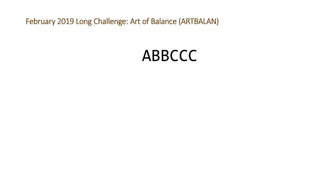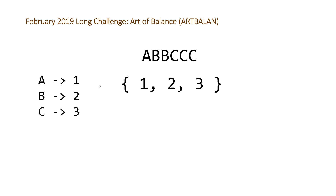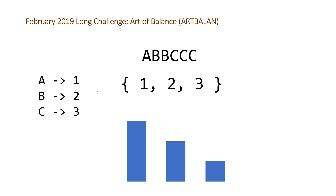Here's a more complicated example. We have six characters: A, B, B, C, C, C. The first thing we need to do is find the frequency of these characters. A occurs once, B occurs two times, and C occurs three times. At this point we don't care about the characters anymore — all we care about is the frequency — so we store these in a vector and sort them from greatest to smallest. We set a variable n equal to the length of our string.